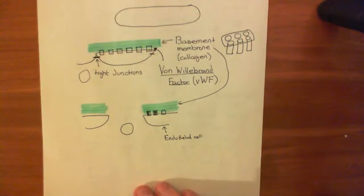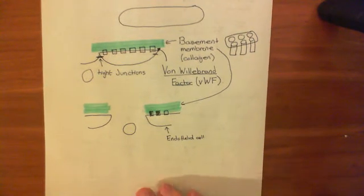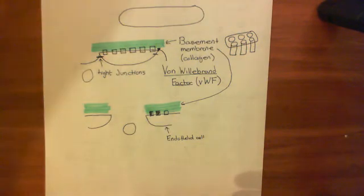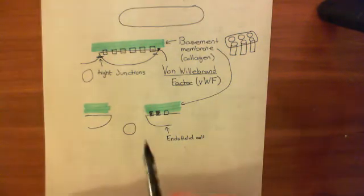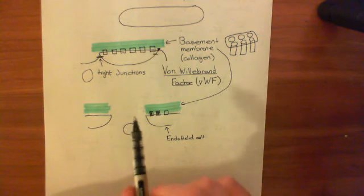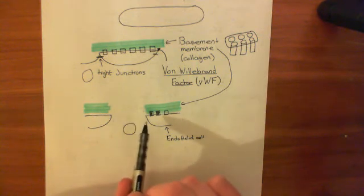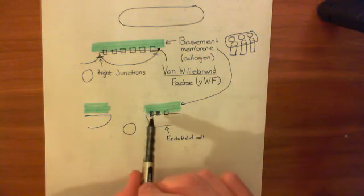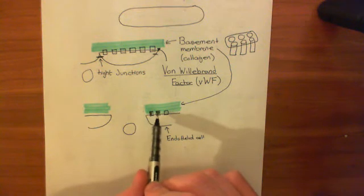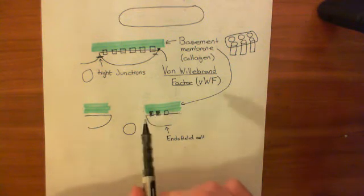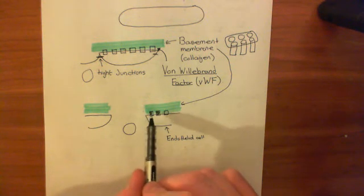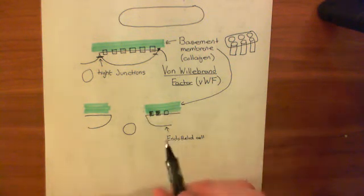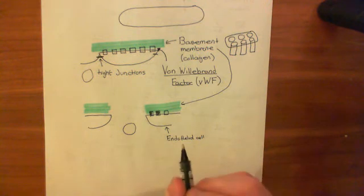Welcome to this next video on platelet adhesion, activation, and aggregation. We've discussed how, if the endothelium gets disturbed, the platelets are going to have access to the basolateral sides of the cell, and in particular they are going to have access to von Willebrand factor.